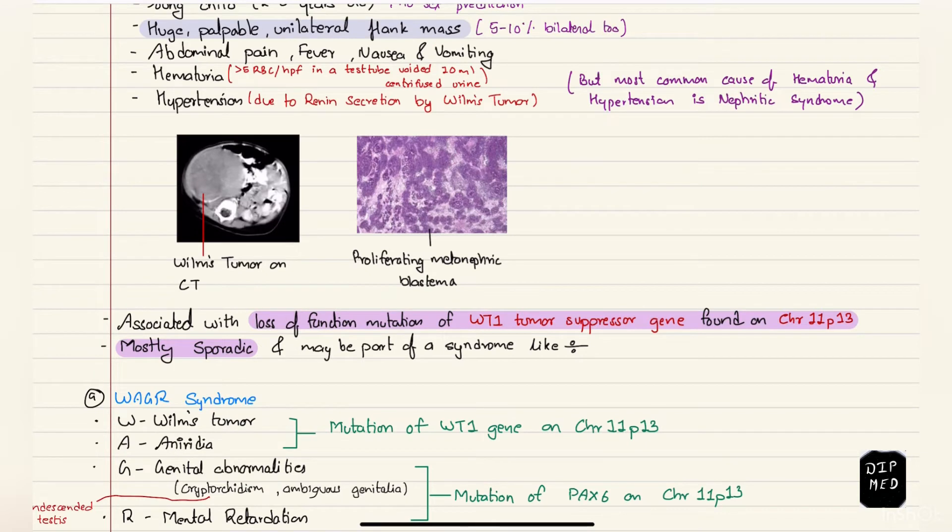The pathogenesis of Wilms tumor is that there is loss of function mutation of WT1 tumor suppressor gene, which is found on chromosome 11p13. So chromosome 11, short arm p, region 1 and band 3. In this chromosome there is WT1 tumor suppressor gene which undergoes mutation causing proliferation of metanephric blastema leading to Wilms tumor.